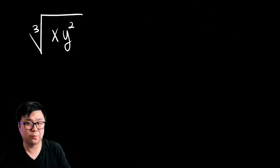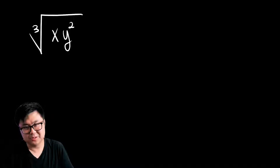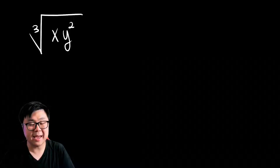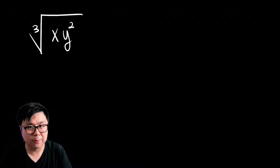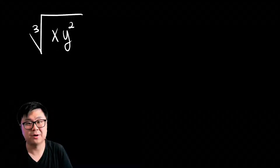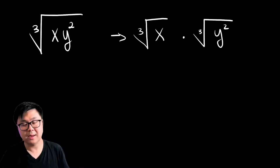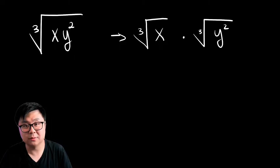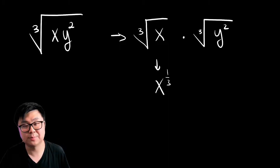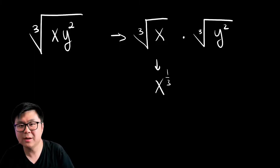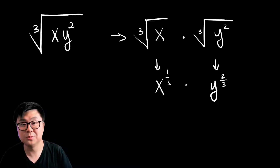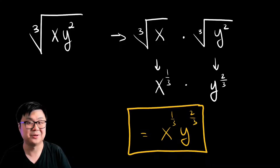If you're comfortable with radicals and radical rules, you can actually do this question another way. Because we have xy squared as our radicand and they're multiplying each other, you can split this up into two separate radicals: the cube root of just x, multiplied by the cube root of y squared. Then convert each radical into a rational exponent — the cube root of x becomes x to the power of one-third, and the cube root of y squared becomes y to the power of two-thirds — and you get the same final answer.